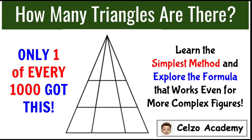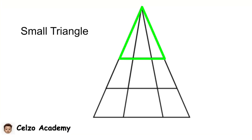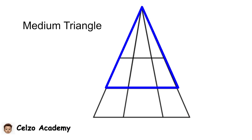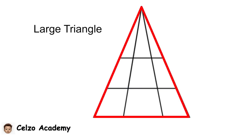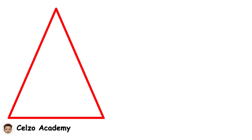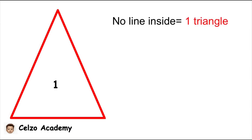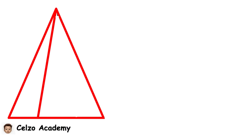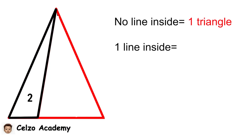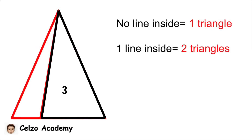In finding the total number of triangles in this shape, let's consider three different sizes: the small triangle, the medium triangle, and the large triangle. If the large triangle has no line inside it, there is only one triangle. If there is one slant line inside a triangle, we can form three triangles total — the original plus two additional ones. So with zero lines inside we have one triangle, and with one line inside we have two triangles... wait, we actually get three triangles.